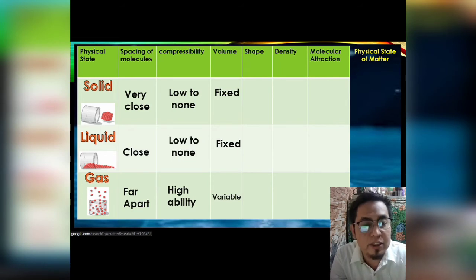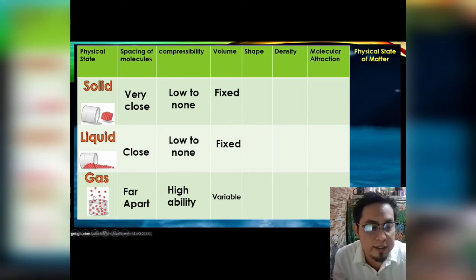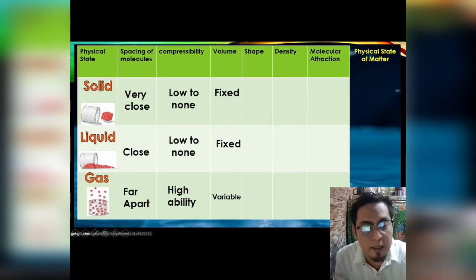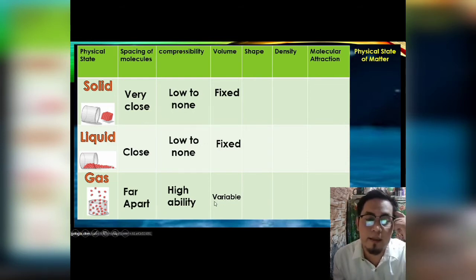The volume of gas may vary and can be changed based on the situation. This is simply because of its particles — the particles of gas are very far from each other, which is why its volume is variable and varies depending on the situation.